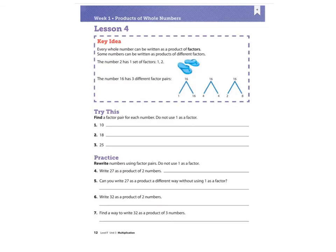Every whole number can be written as a product of factors. Some numbers can be written as products of different factors. The number two has one set of factors — one and two. But the number 16 has three different factor pairs: one times 16, four times four, and two times eight. These are called factor pairs.